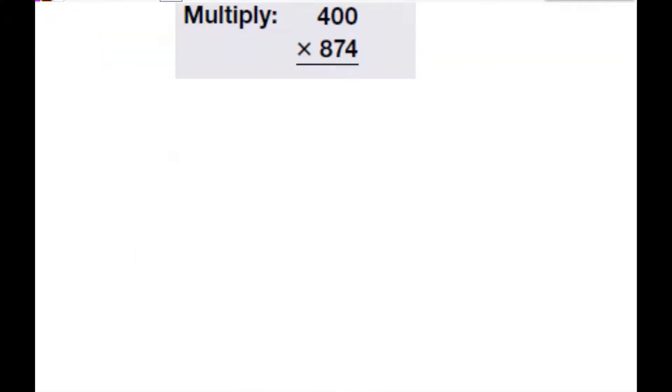Here we have the problem 400 times 84. To make this problem easier, I can reverse the order of the factors so that I can deal with these zeros. So I can take 874 times 400. Now the trick with zeros, when we multiply with numbers that end in zero or are factors of ten, is these zeros can just drop straight down into my answer, because zero times anything is just zero. So now I can multiply by the four.